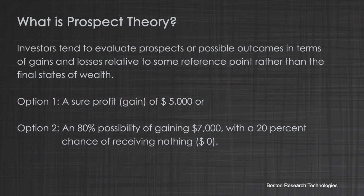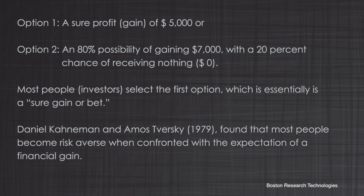Let's give an example. Option one: a sure profit or gain of five thousand dollars. Or option two: an eighty percent possibility of gaining seven thousand dollars and a twenty percent chance of receiving nothing. Which would you choose? Most people we find select the first option, which is essentially a sure bet.